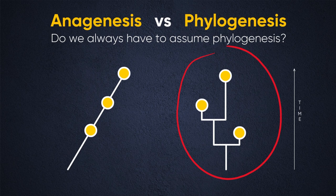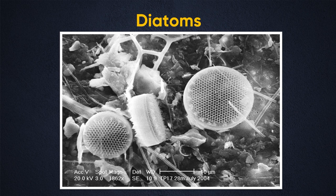This forces us to ask: do we always have to assume phylogenesis when we look at fossils? The answer is no, not always. Here we have diatoms — single-celled organisms that produce an exoskeleton. They're called diatoms because they come in two pieces. When they reproduce asexually, they split in half, but they also reproduce sexually; all diatom species can do both, depending on the circumstances. When conditions are right they reproduce by splitting in two, and under different circumstances they reproduce sexually.